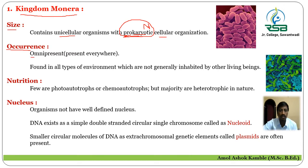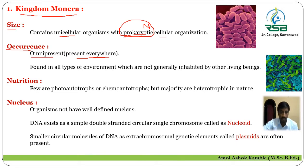The organisms in Kingdom Monera are omnipresent, meaning they are present everywhere. They are found in all types of environments around the world, across all climate conditions.